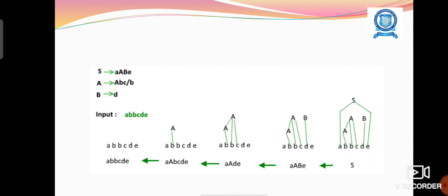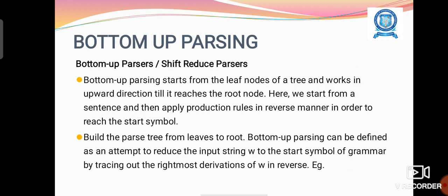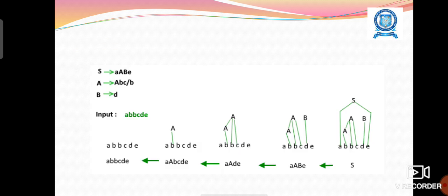Example, this is the grammar: S tends to a, a, b, e, a tends to a, b, c, r, b, e, b tends to d. So here it is performed in a reverse manner. It is performed in a bottom-up manner to find out the final derivation of the grammar.